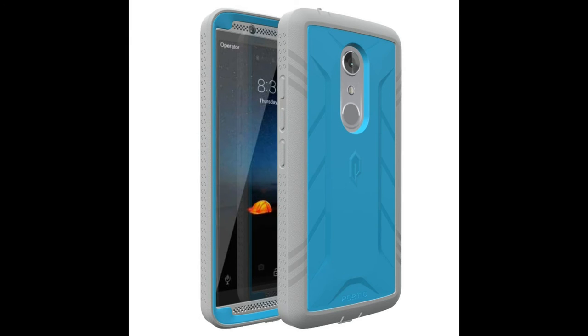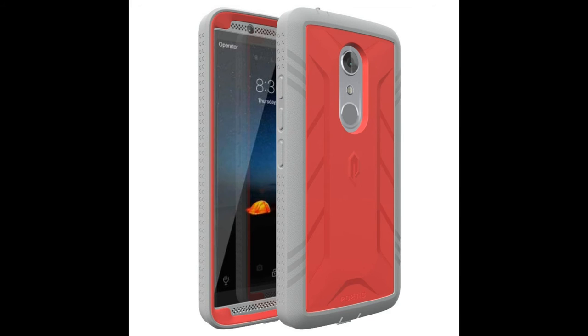This revolution case for the Axon 7 comes in black, blue-gray, and what they call pink gray, but it looks more red to me. All of them are very well done and solid. $16.95 on Amazon, I'll leave a link in the description.